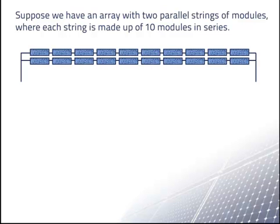Here is an example of how to determine the rated maximum power of an array made up of series strings of modules connected to each other in parallel. We have two strings in this case, each of which has 10 modules, so we have a total of 20 modules.